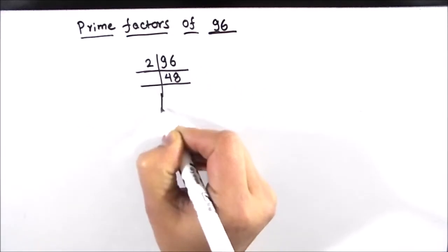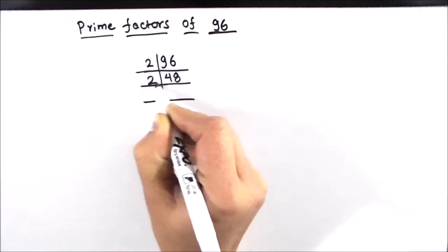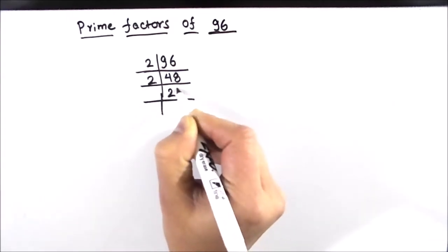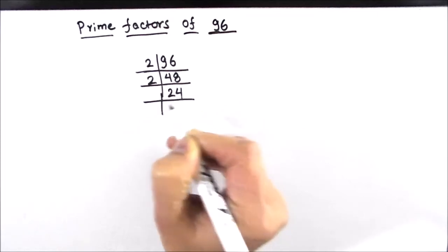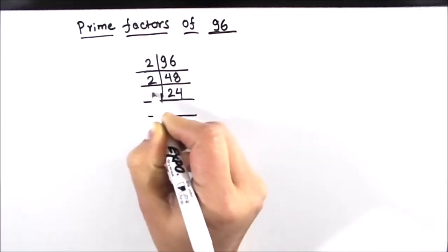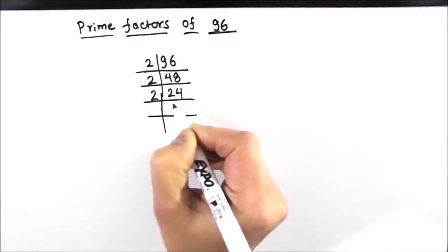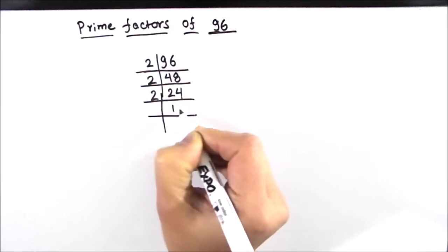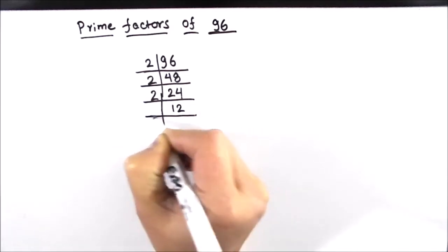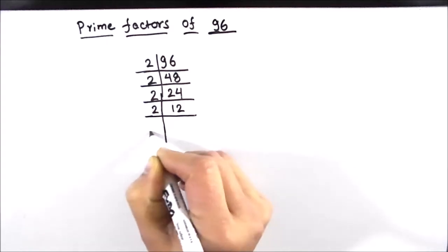Next, 48 is again even and it is divisible by 2. 2 times 2 is 4 and 2 times 4 is 8. Again we are going to use 2 as the divisor — 2 times 1 is 2, 2 times 2 is 4, and 12 is divisible by 2.